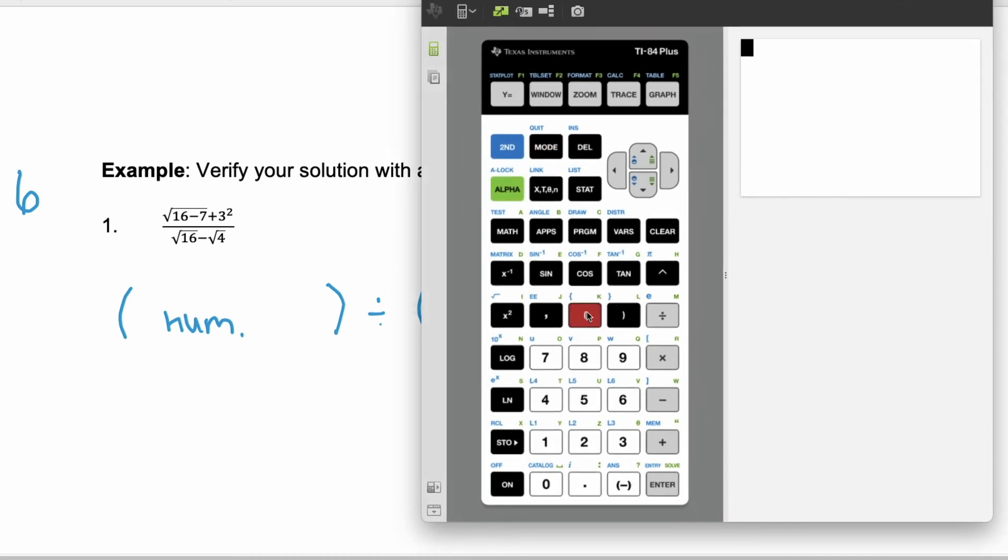So parentheses and then we're going to start with our numerator. First, we have the square root. So here it's that blue icon. So we have to hit second and then square root and it gives us the square root. And we're going to enter 16. Notice the 16 is staying inside the square root as a radicand.